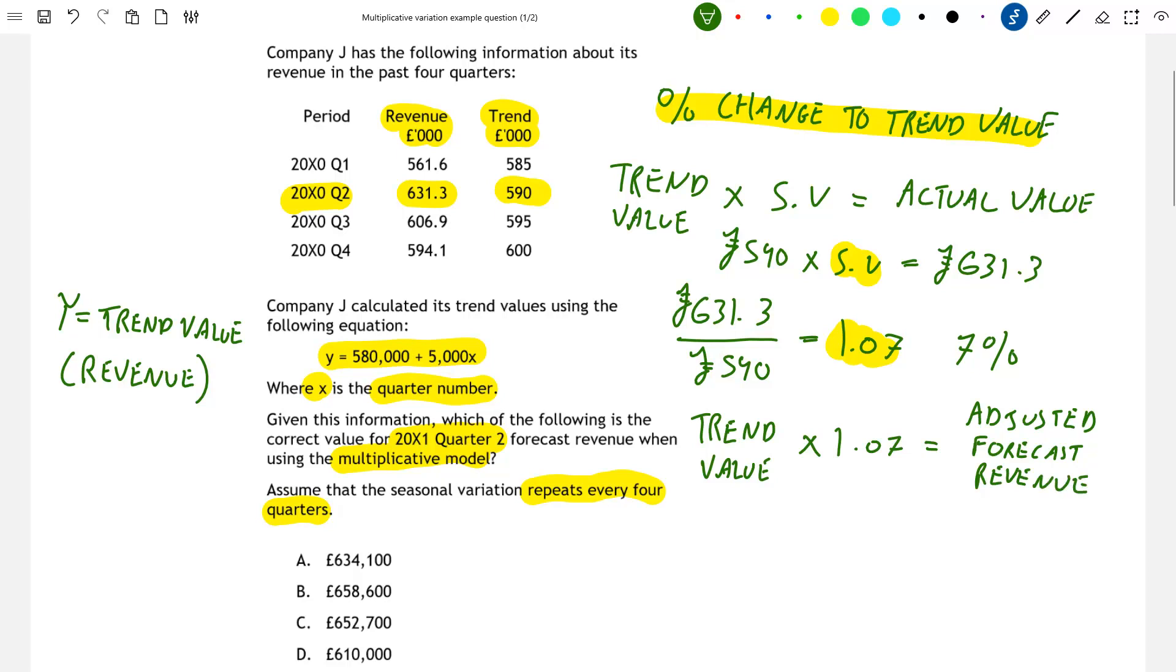And all adjusted means in this context is that we have considered seasonal variation when making our forecast. That is to say, we've adjusted the trend value by the relevant percentage. So let's calculate our trend value. Looking to our equation, we see we take 580,000 and then add 5,000X where X is the quarter number. So in 20x0 quarter 4, the quarter number is 4. In 20x1 quarter 1, the quarter number is 5. And therefore in 20x1 quarter 2, the quarter number is 6. So this gives us a trend value of 610,000 and it's in pounds because this is a trend value for company J's revenue.